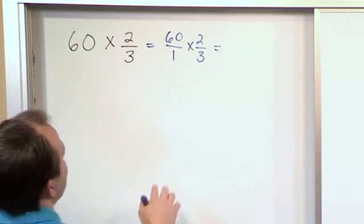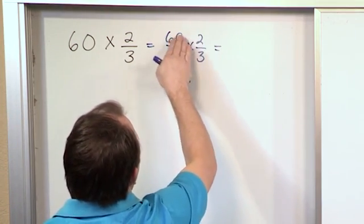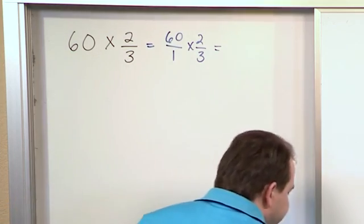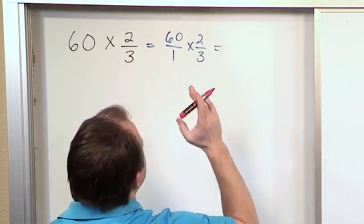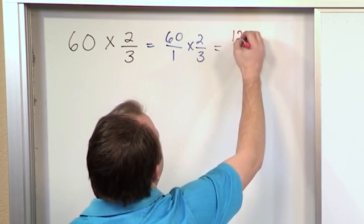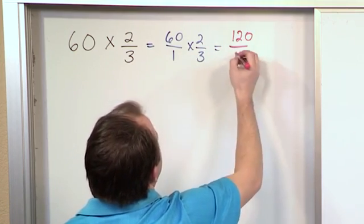But I think now you know when we multiply fractions, we multiply the tops, we multiply the bottoms. So I'm going to just write that down. 60 times 2 is 120, and on the bottom 1 times 3 gives me 3.